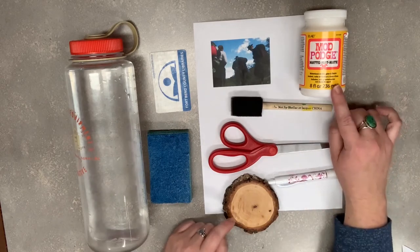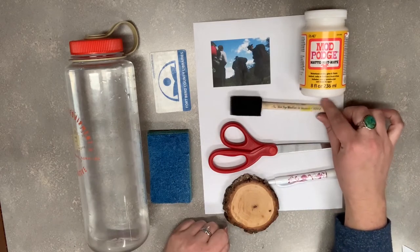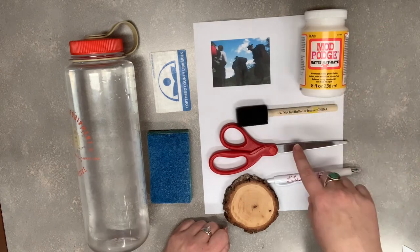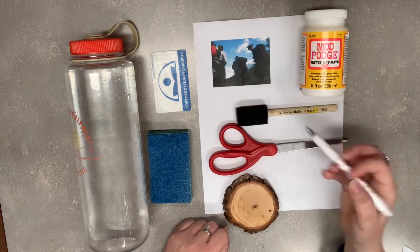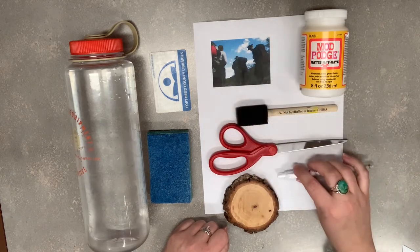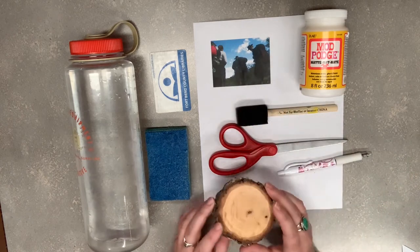You will also need some Mod Podge, a brush to apply the Mod Podge, some scissors to cut out your image, I like to use a pen to trace out the shape of my object, and you will need your smooth surface.